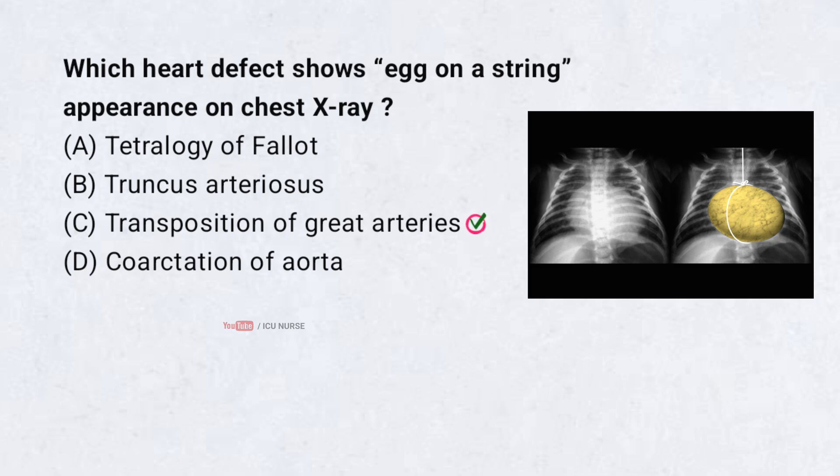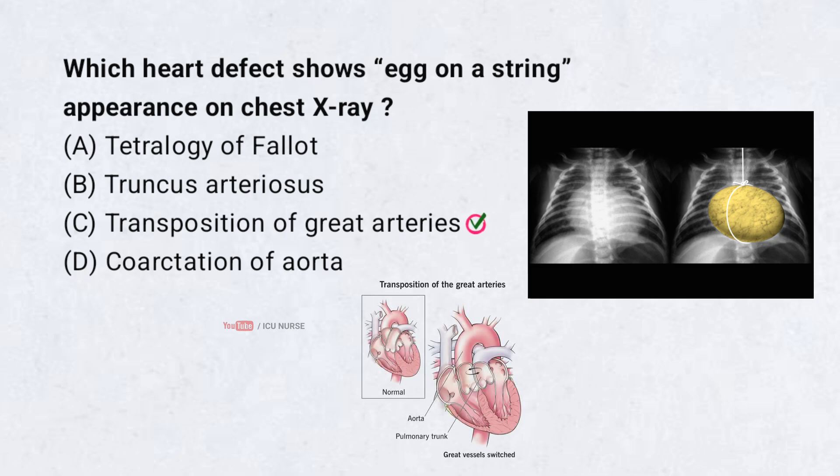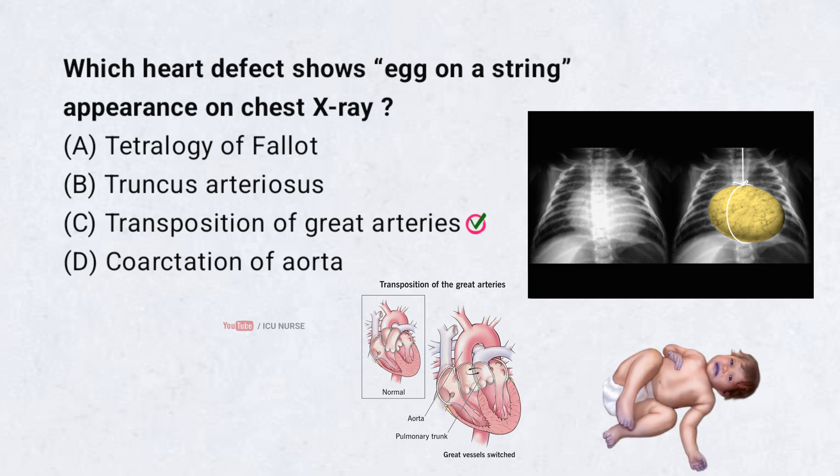Transposition of the great arteries creates an egg-on-a-string look on X-rays. The egg shape comes from the enlarged aorta and pulmonary artery. The string is the narrow mediastinum from thymus shrinkage. This happens because the aorta connects to the right ventricle incorrectly. Babies with transposition of the great arteries turn blue at birth and need immediate care.